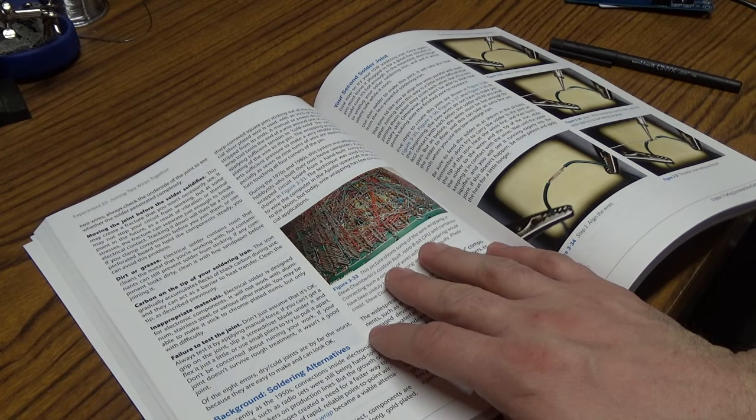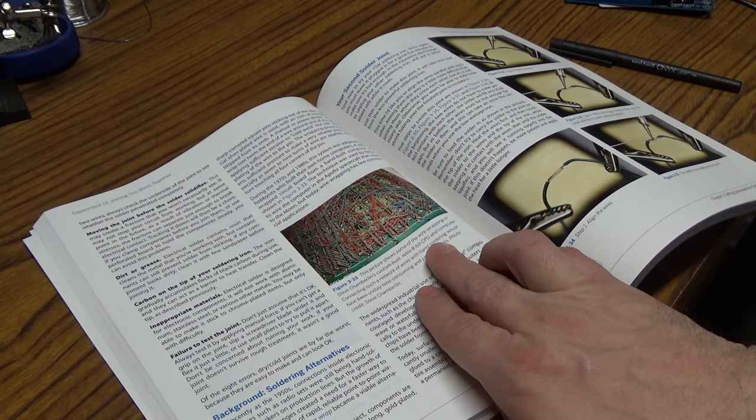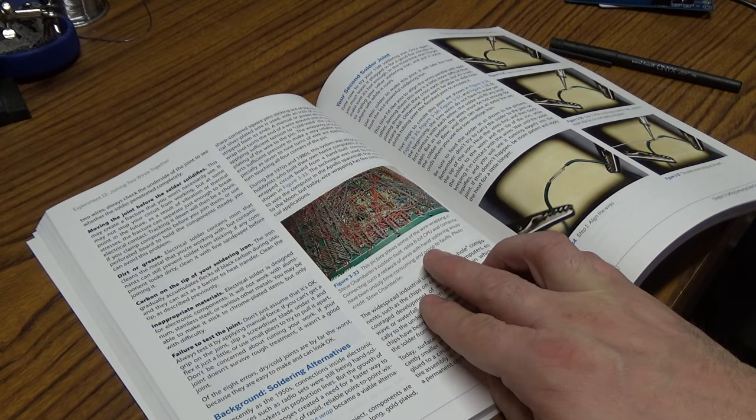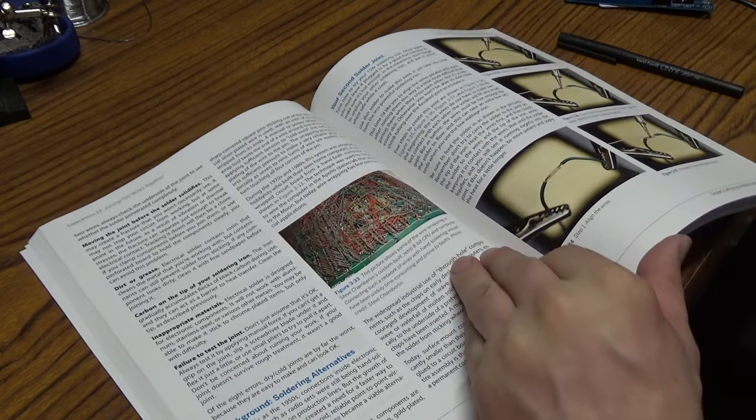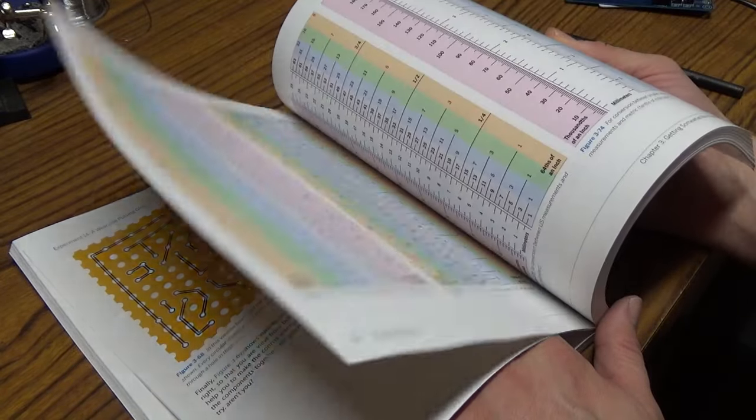And also interspersed they have like little tidbits of information like little bits of trivia. For instance this one here is about wire wrapping in Steve Chamberlain's custom built retro 8-bit CPU computer, which really makes that extra bit of interest.